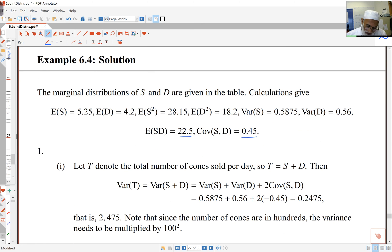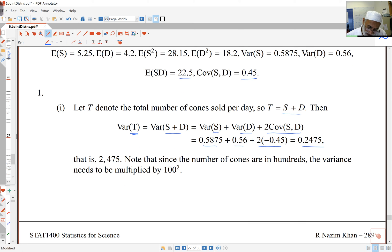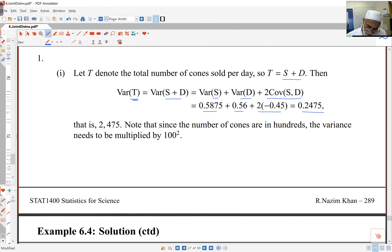If I put T as the total number of cones per day, T is S plus D. The variance of T is variance of S plus D. My formula says that's variance of S plus variance of D plus twice the covariance. I put the numbers in there: variance of S, variance of D, twice covariance. I get 0.2475 as the variance of the total number of cones sold. Because this is in hundreds, I need to multiply this by 100 squared.